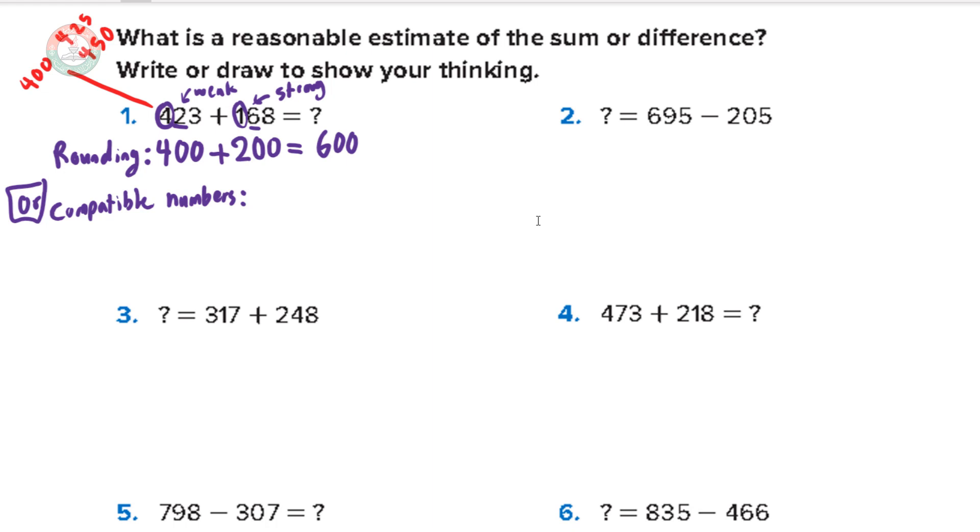I can see that the 423 is between 400 and 425, but it's closer to 425. So I'll use 425. So it will be 425 plus, for the 168, I can see it's close to, let's see, 150 is less than it. And 175, it's more than the 168. But is it closer to 150 or 175? I see it's closer to 175. So I'll use here the 175.